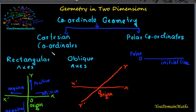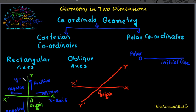For Cartesian coordinates, there are two lines: x, o, x-dash and y, o, y-dash intersecting at a point o. This point is called the origin. The line x, o, x-dash is the x-axis, and similarly y, o, y-dash is the y-axis.